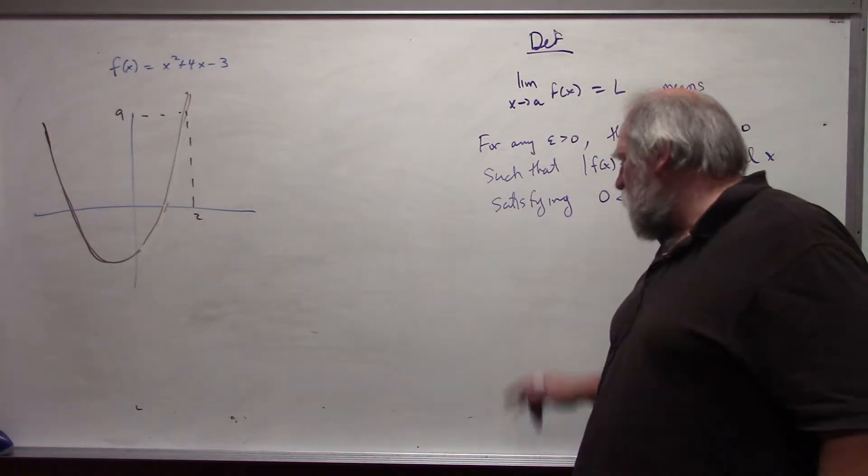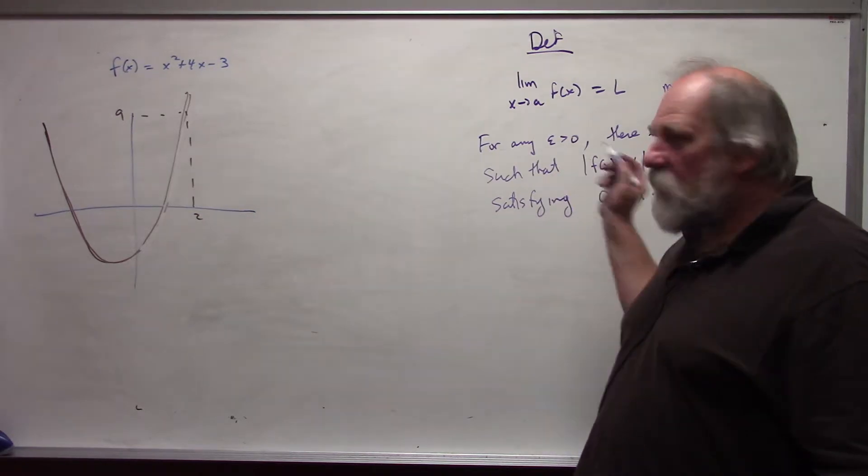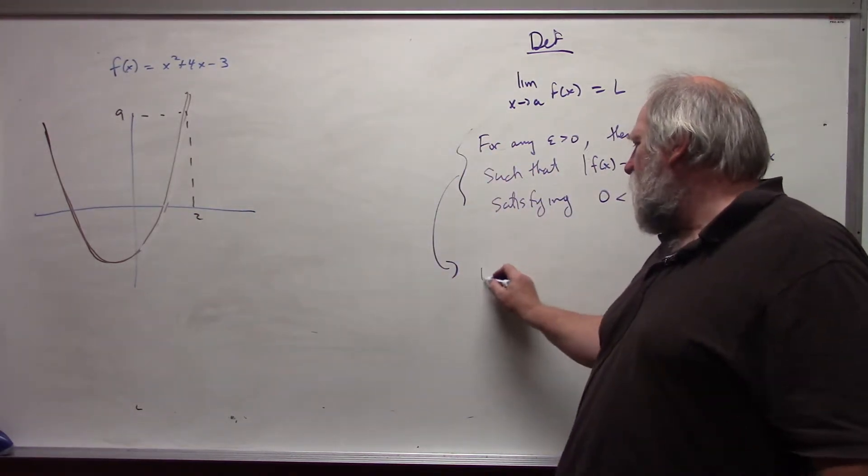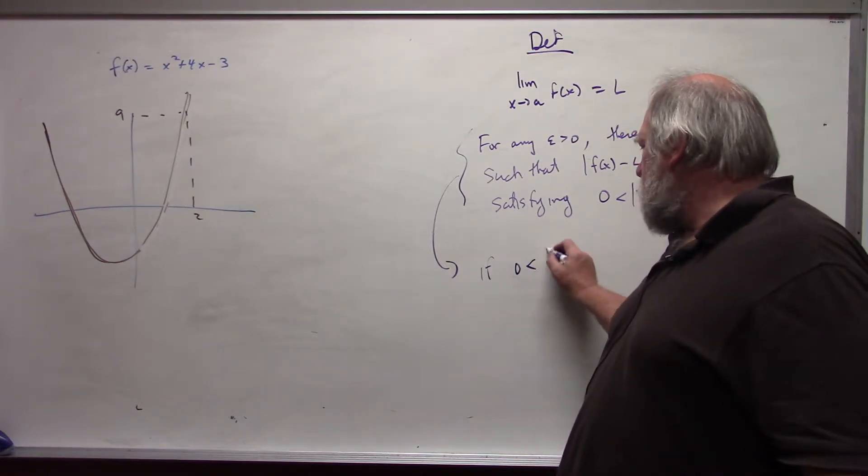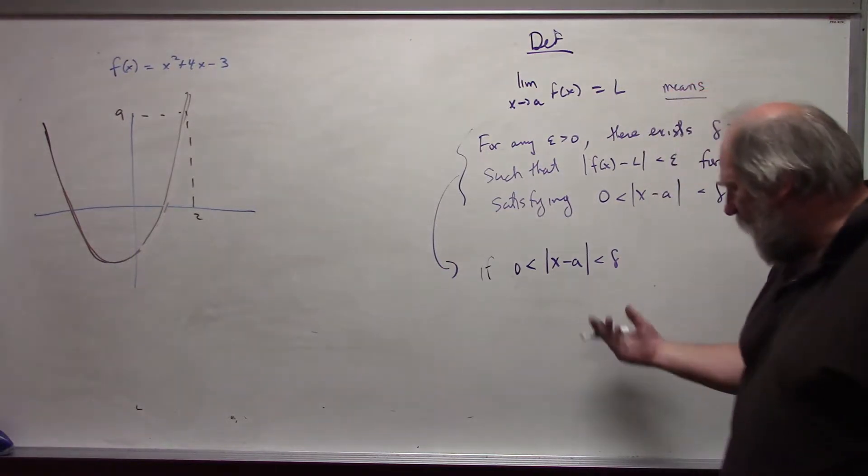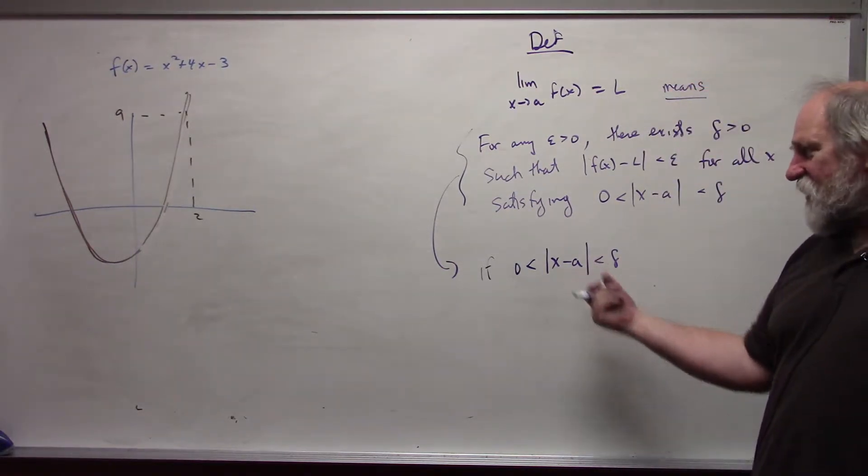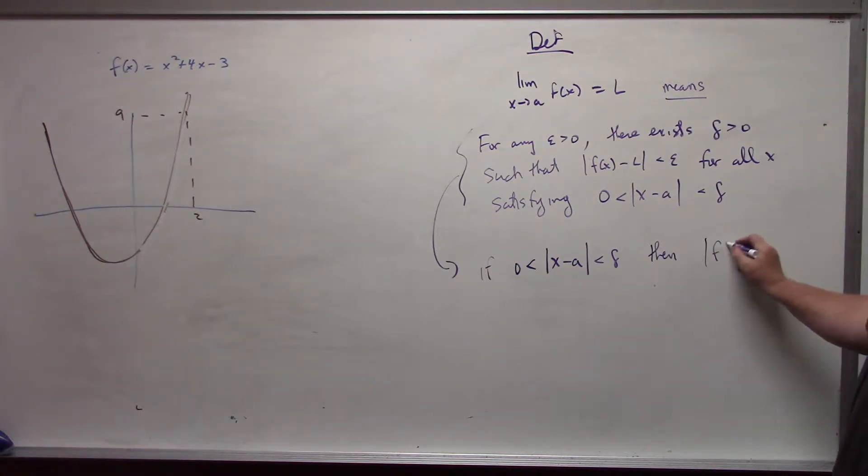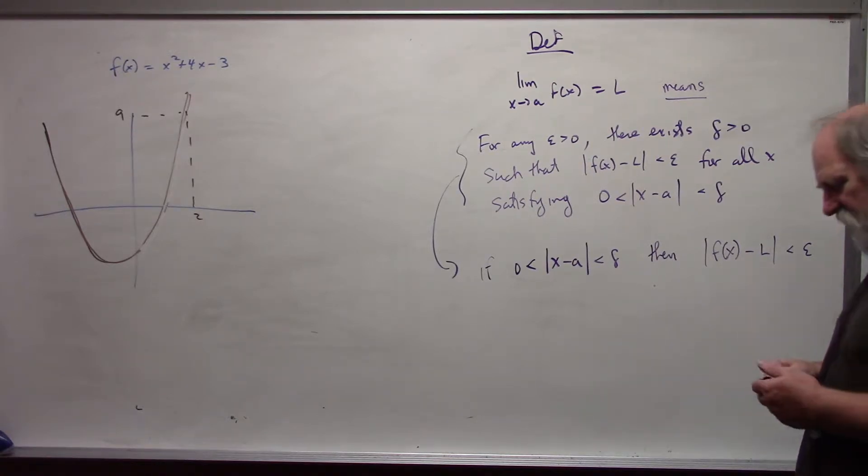Secondly, this definition can also be written in an alternate way. This means if 0 is less than the absolute value of x minus a is less than delta, if I get within delta distance of a, then my function ends up within epsilon distance of l. Absolute value represents distance.